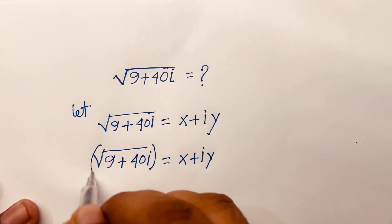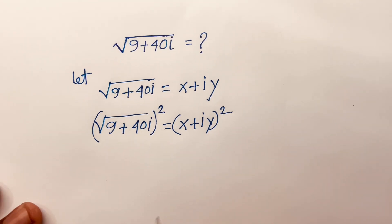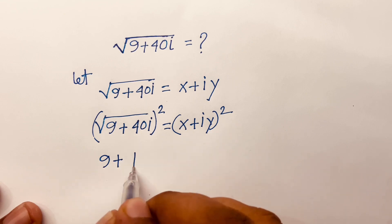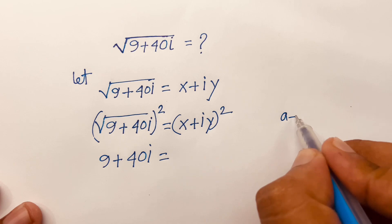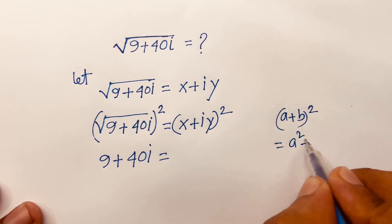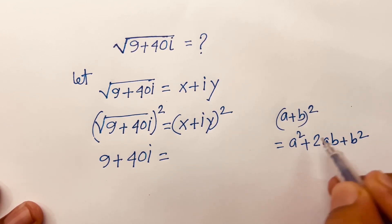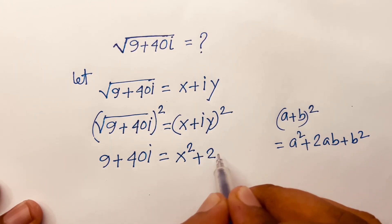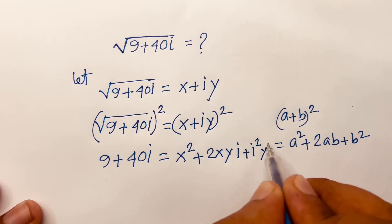I just use both side hollow square. Then the square root is cancelled. So we find out 9 plus 40i is equal to — we know that (a + b)² is equal to a² plus 2ab plus b². According to this rule I can say here is x² plus 2xyi plus i²y².